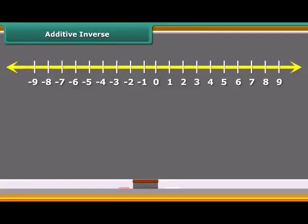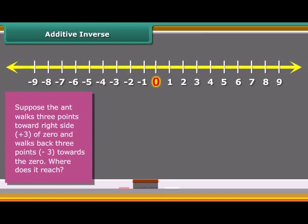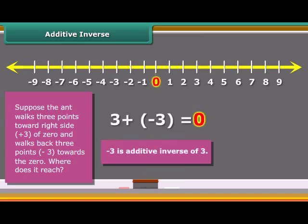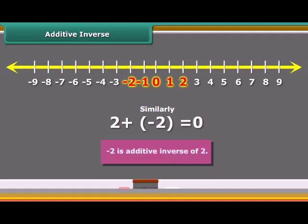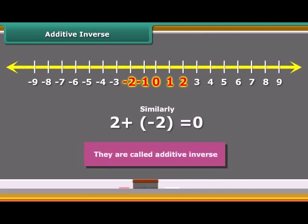Now we will learn additive inverse. Suppose the ant walks three points from 0 to the right side and walks back three points. Where does it reach ultimately? You can see that it will reach 0. We add 2 and minus 2, we obtain the sum as 0. Numbers such as 3 and minus 3, 2 and minus 2, when added to each other, give the sum 0. They are called additive inverse.